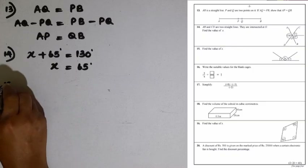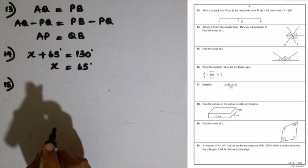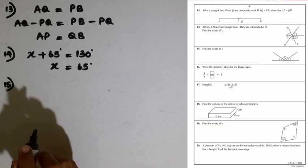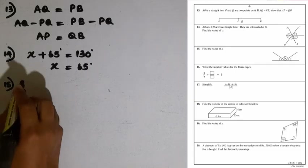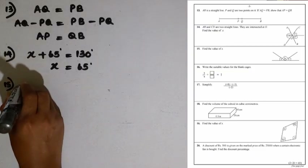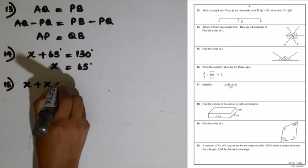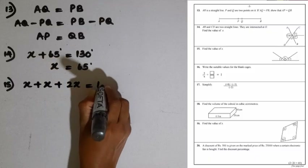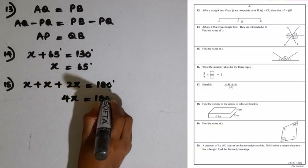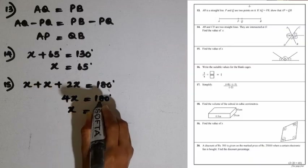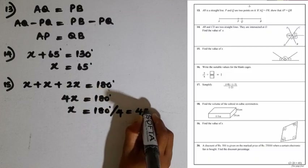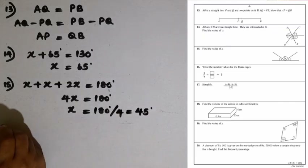Question number 15: find the value of x. All three angles x, x, and 2x are located on one side of a straight line, so their sum equals 180 degrees. We write x plus x plus 2x equals 180 degrees, giving 4x equals 180. Therefore x equals 180 divided by 4, which is 45 degrees.